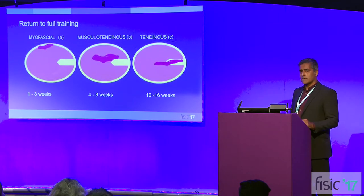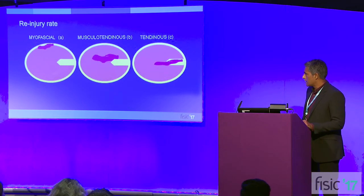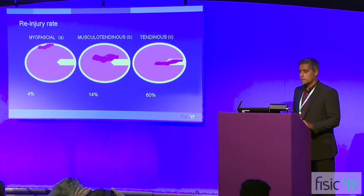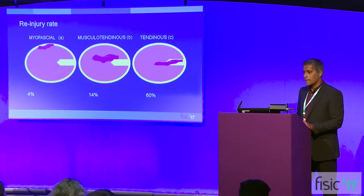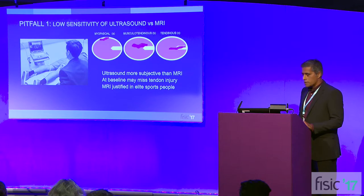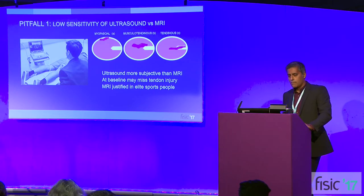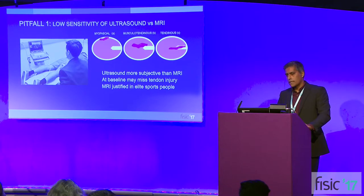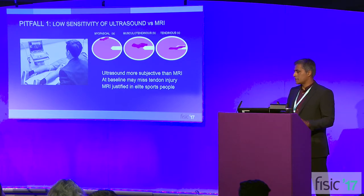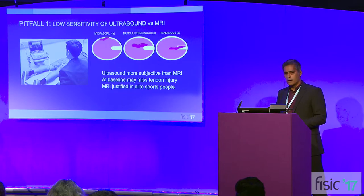Return to full training is one to three weeks for myofascial injuries, four to eight weeks for muscular tendinous injuries, but significantly longer at 10 to 16 weeks for tendinous injuries. The real measure of whether they were ready to go back is whether they get injured again. Re-injury rates are very low in myofascial injuries, a little more in muscular tendinous, but for our athletes with tendinous injuries it was a real shock: 60% were getting injured again despite longer return-to-play times. That's where we wanted to target our strategy.